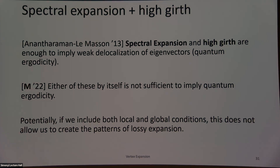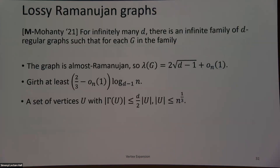We were hoping that including both these local and global conditions doesn't allow us to create patterns of poor expansion. But from the first slide, you can probably guess this is not possible. What I showed with Anantharaman is that for infinitely many D, there's an infinite family of D-regular graphs such that for every graph in the family: the graph is almost Ramanujan, it's high girth, and it has a poorly expanding set of polynomially small size.